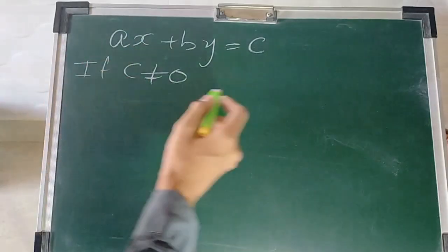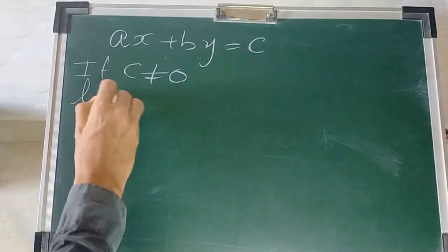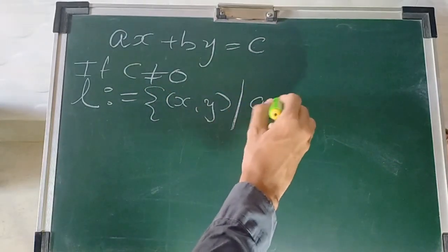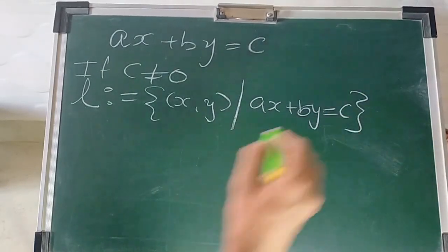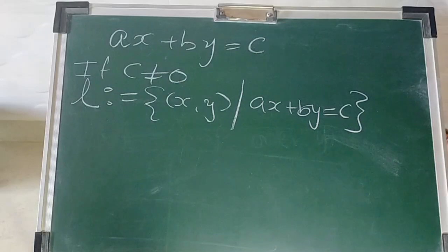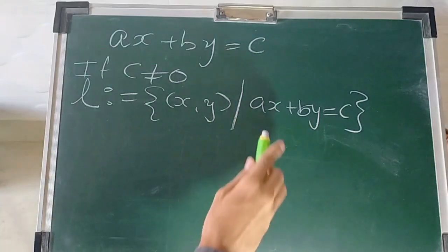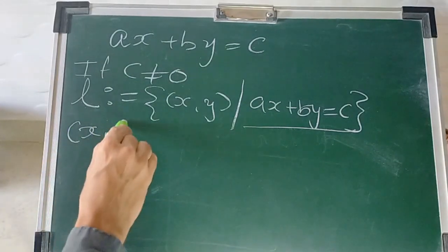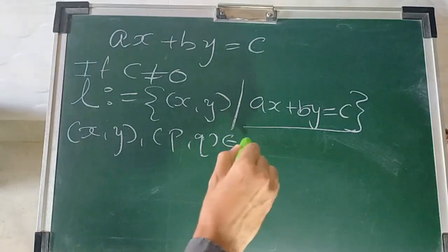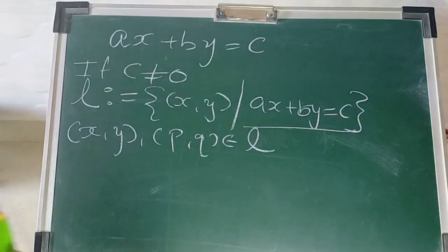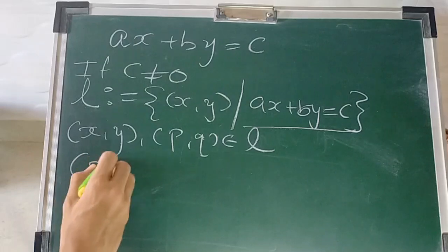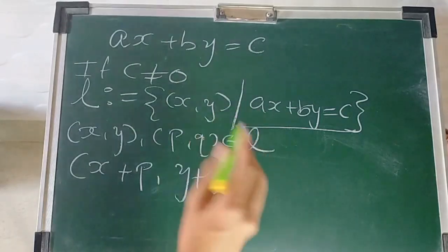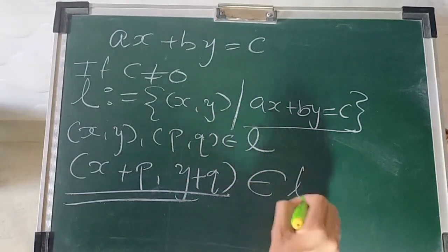For example, suppose the points on line L are defined by the set L = {(x, y) : ax + by = c}. Now I consider two points (x, y) and (p, q) from line L, and I add them. After adding them I get (x+p, y+q) using our operation. Is this an element of L?